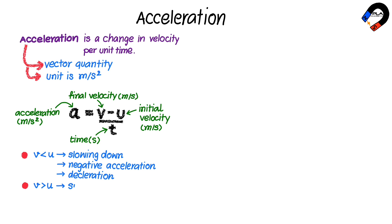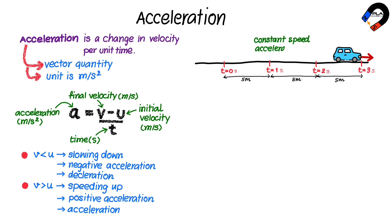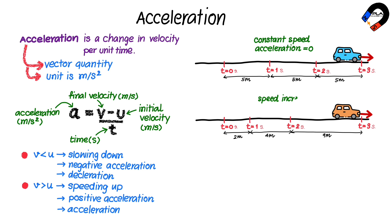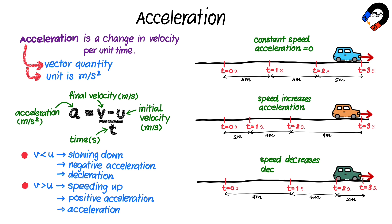When final velocity v is more than initial velocity u, the object is speeding up and acceleration is positive. This is called acceleration. If a car moves the same distance every second, it is traveling with constant speed and acceleration is zero. If a car moves with increasing distance every second, it is traveling with increasing speed and it is accelerating. If a car moves with decreasing distance every second, it is traveling with decreasing speed and it is decelerating.